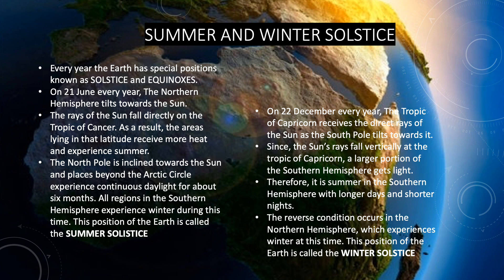Now let's talk about Winter Solstice. On 22nd December every year, the Tropic of Capricorn receives the direct rays of the sun as the south pole tilts towards it. In this position, the south pole faces the sun directly. Since the sun's rays fall vertically at the Tropic of Capricorn, a larger portion of the southern hemisphere gets light. Therefore, it is summer in the southern hemisphere with longer days and shorter nights. The reverse condition occurs in the northern hemisphere, which experiences winter at this time. This particular position is called Winter Solstice.